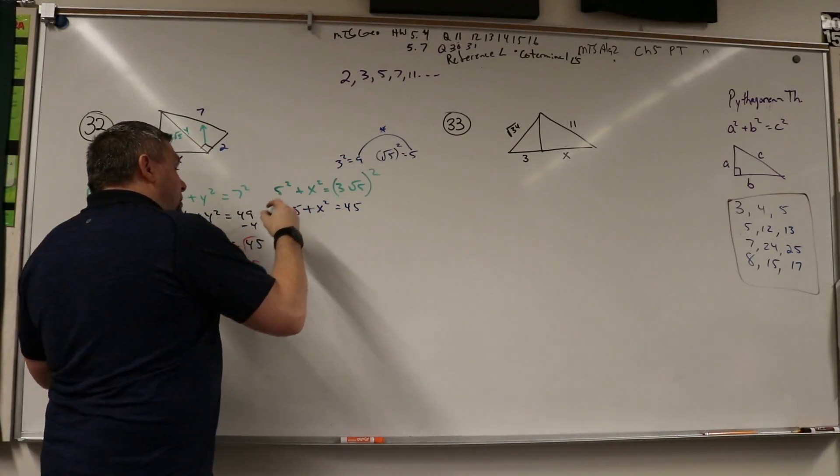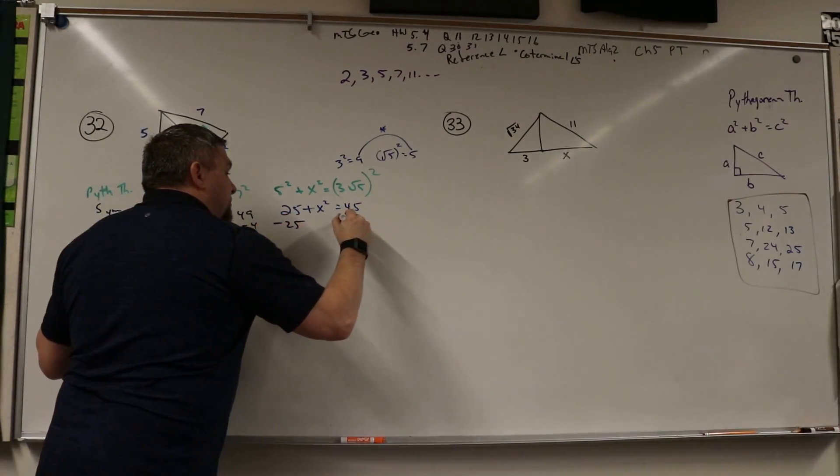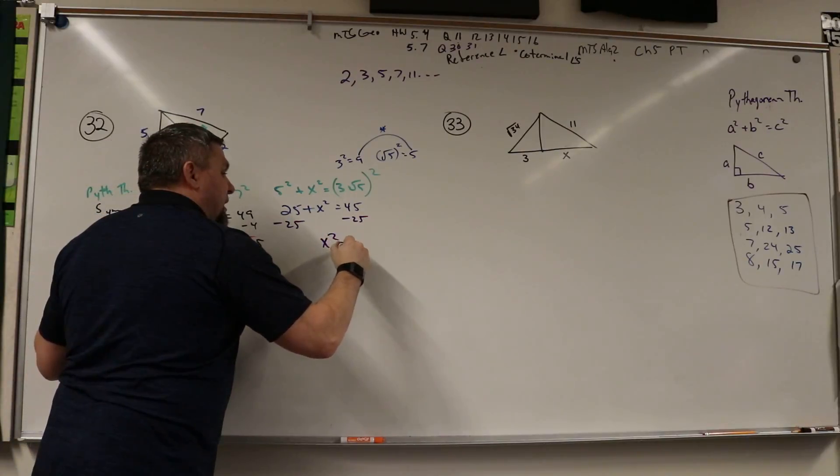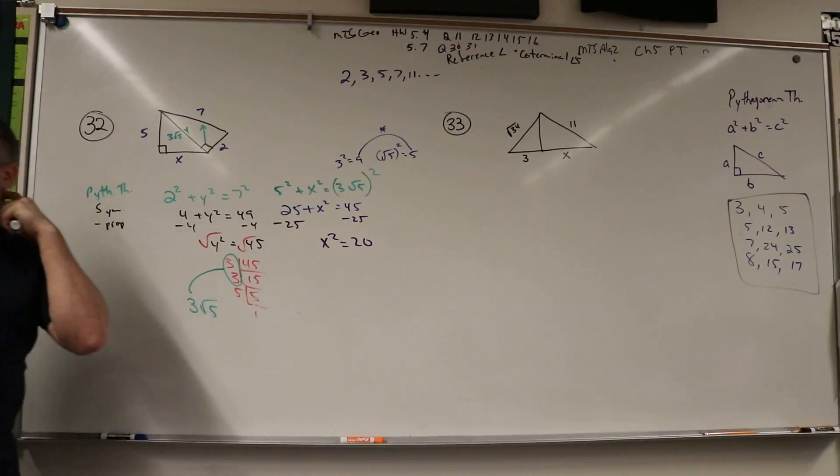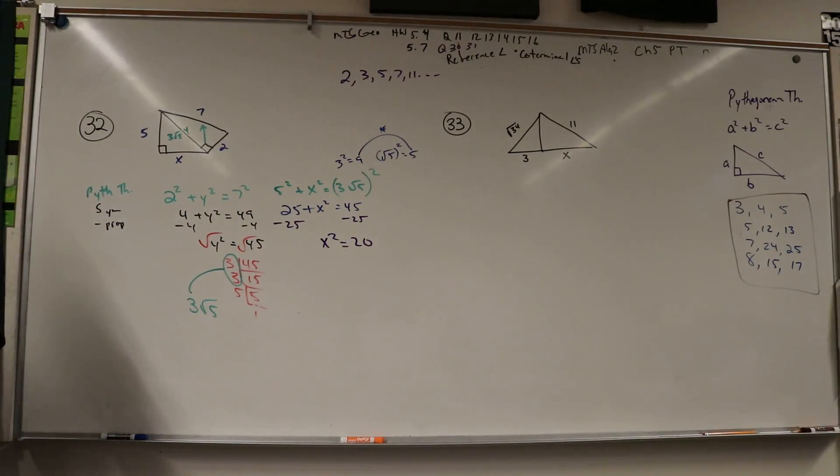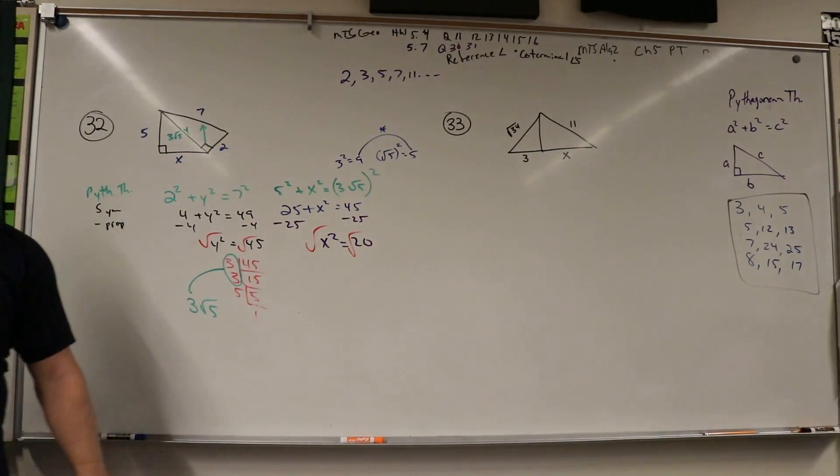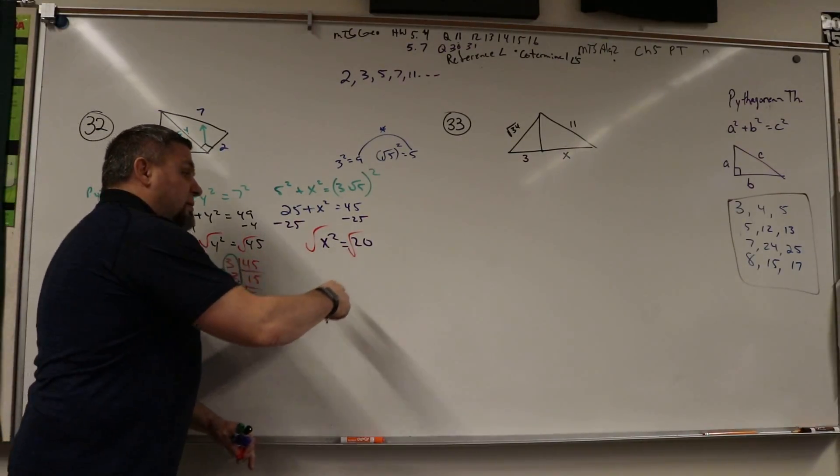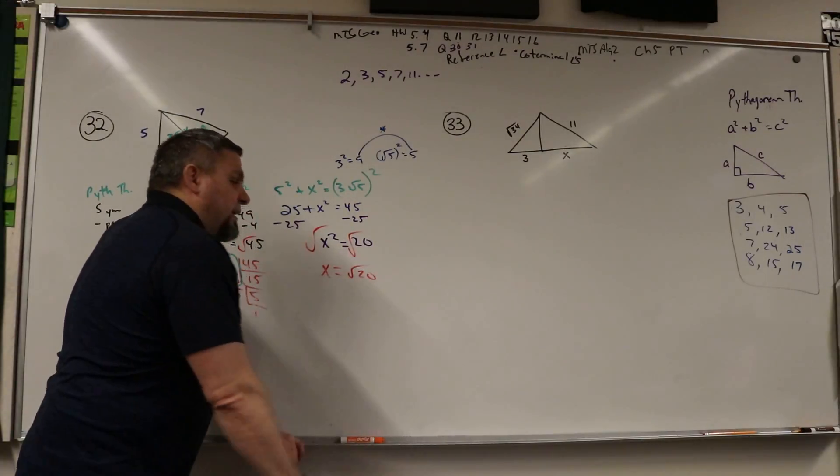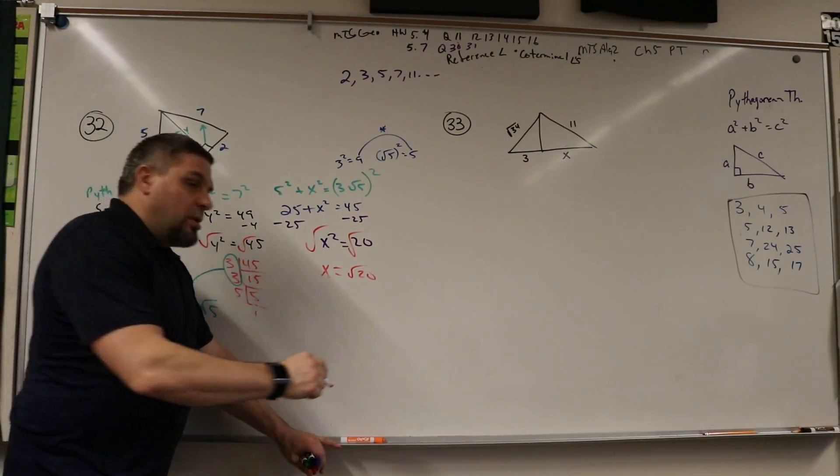Now we're going to solve: minus 25, minus 25. What do we get? x² = 20. But then what do we got to do? Square root. Wow, there's a lot of this square root stuff, isn't it? Then x = √20, but are we done? No, we got to break down 20.